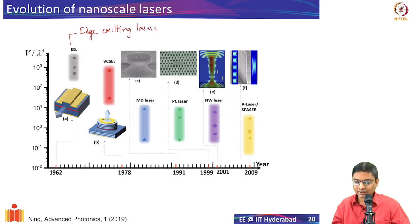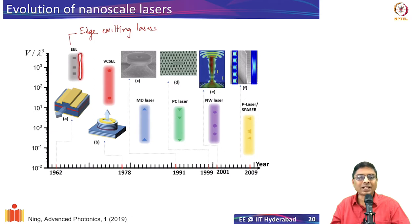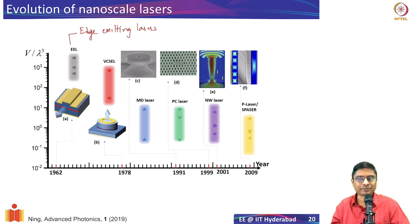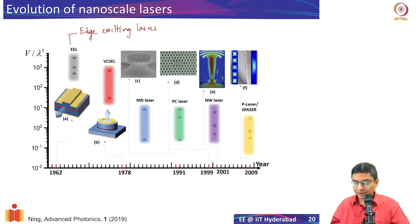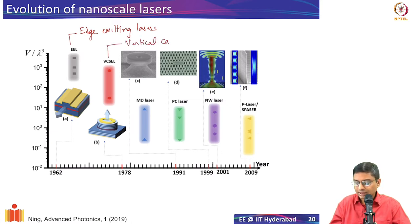These are the traditional cavities. By about a decade later, around 1978, a new type of design was implemented called the VCSEL — the Vertical Cavity Surface Emitting Laser.